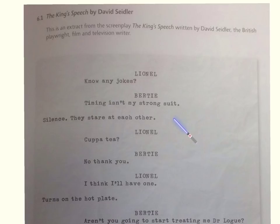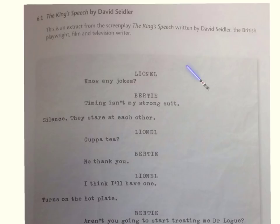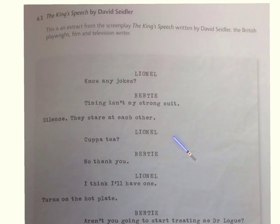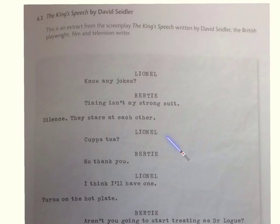Then we have stage directions, which are again a generic feature of screenplay - 'silence, they stare at each other.' You might think there's not a lot of detail in this script, but this is David Seidler's original script. When making a film, there'll be a camera script later telling you where the camera's meant to be and what the director's doing. This is really just the dialogue and a few minimal stage directions - all the other stuff is worked out later by the actors and director.